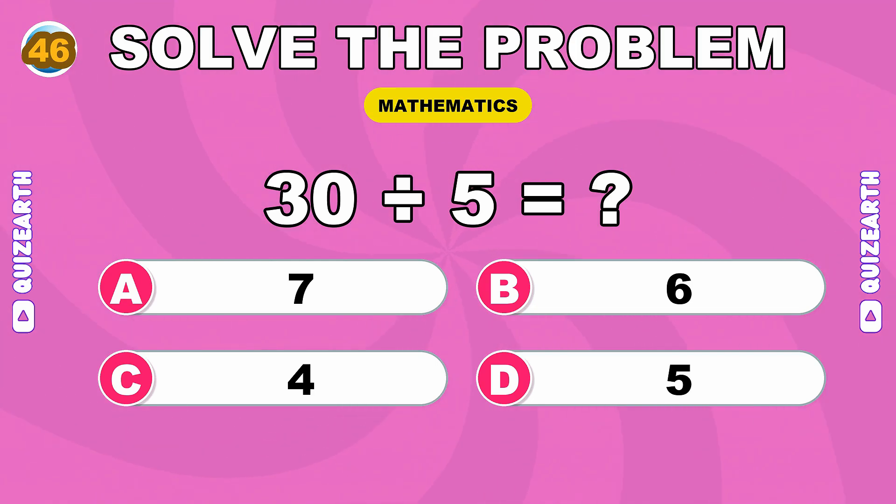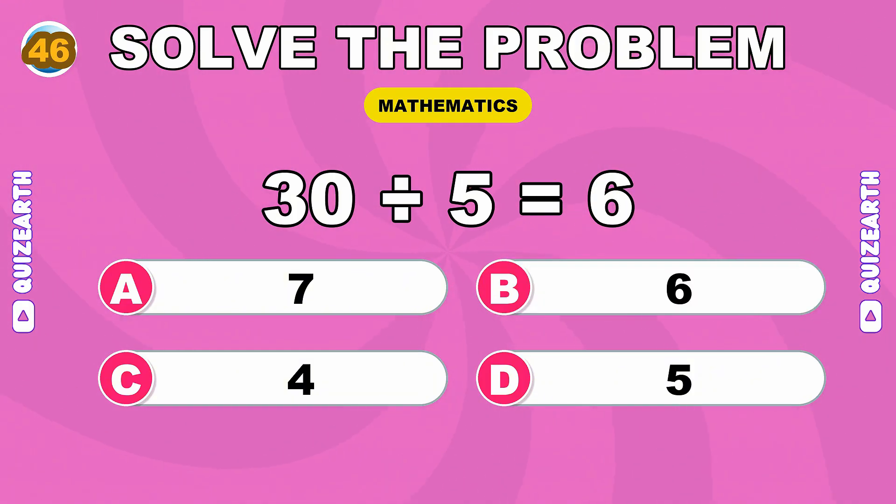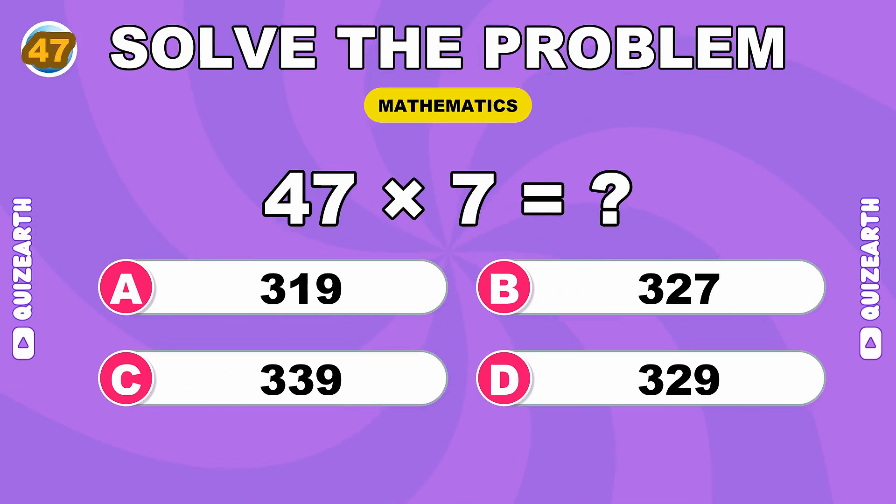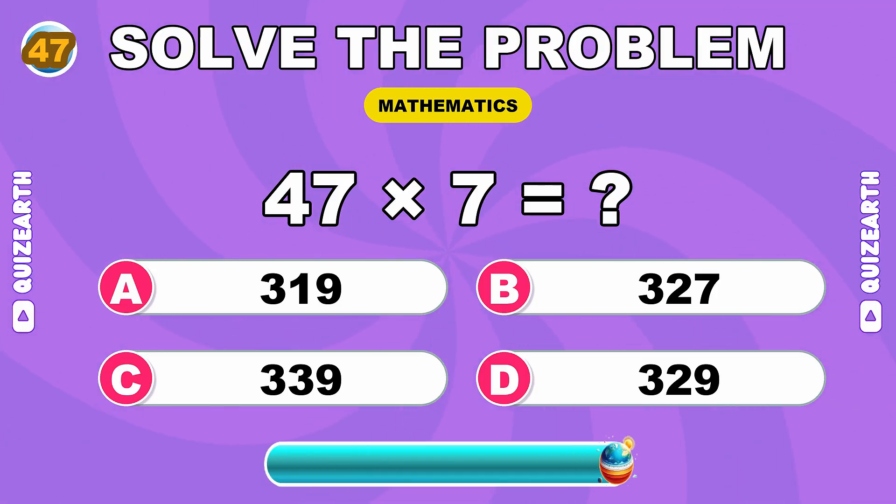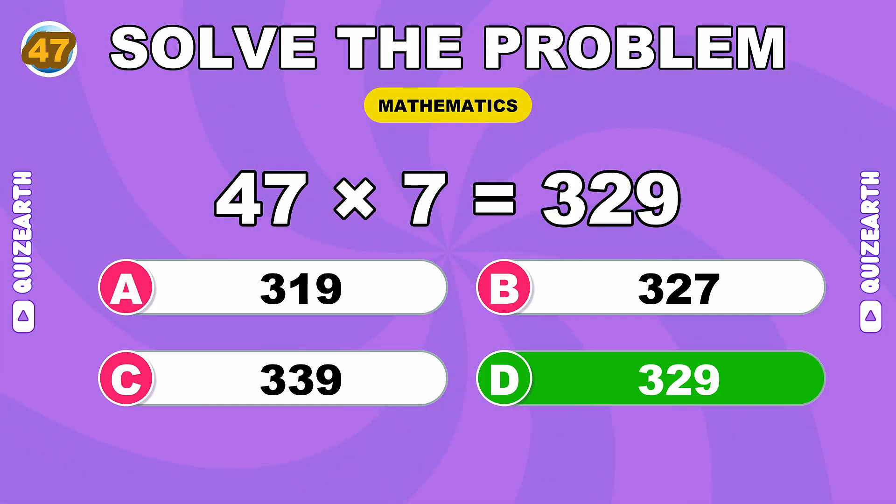What is 30 divided by 5? Sharp as ever, 6. How much is 47 times 7? Superb execution, 329.